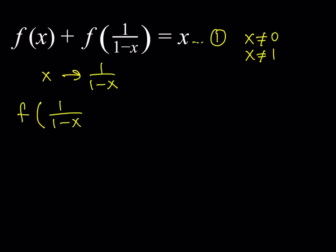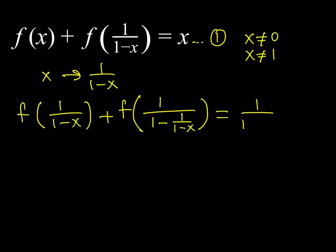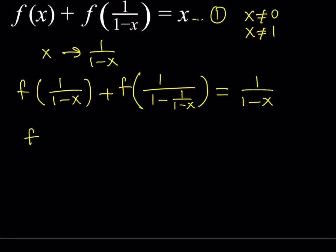f(1/(1-x)) plus... now in this expression, if you replace x with 1/(1-x), let's see what happens: 1 over (1 minus 1/(1-x)). That's a complex expression — let's simplify it. If you make a common denominator, you get 1 minus x minus 1 over (1-x). The 1s cancel out, leaving negative x over (1-x).